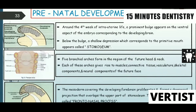These diagrams show what changes take place during the prenatal development of the maxilla. In diagram number 1, around the 4th week of intrauterine life, a dominant bulge appears on the vertical aspect of the embryo corresponding to the developing brain. Below the bulge, a shallow depression corresponding to the primitive mouth appears, called the stomodeum.